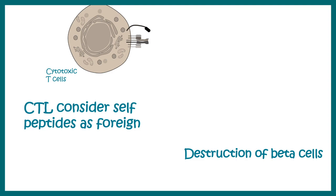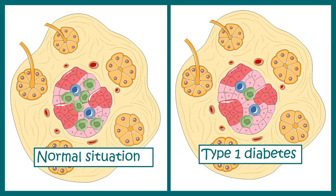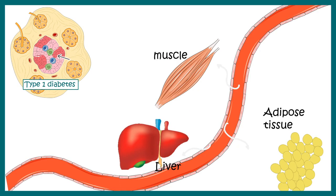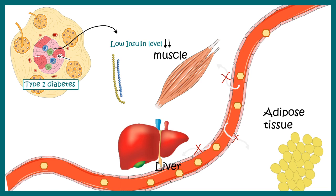Once pancreatic beta cells are destroyed, very little insulin is secreted. You can see on the left-hand side the normal distribution of pancreatic beta cells, which has dramatically reduced in an individual suffering from type 1 diabetes — that is the major pathophysiological finding. When insulin levels are low, there is little or no blood glucose mobilization, and blood glucose levels remain elevated for a long time, leading to many adverse consequences.